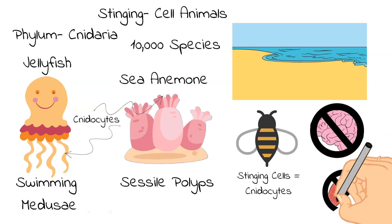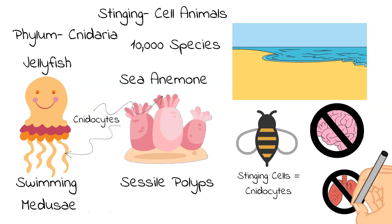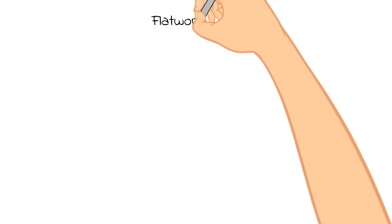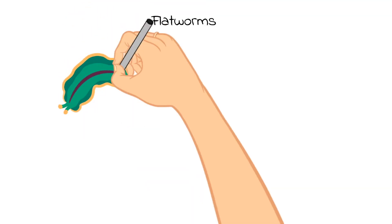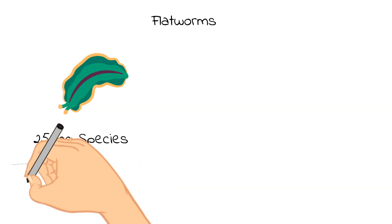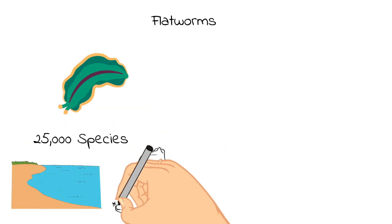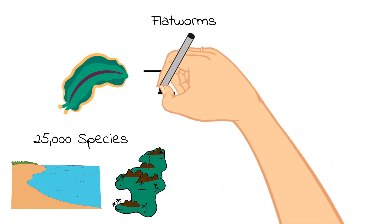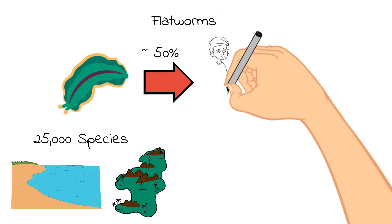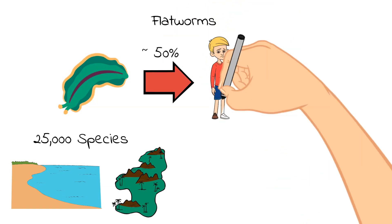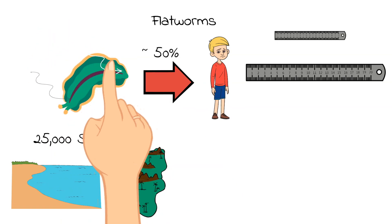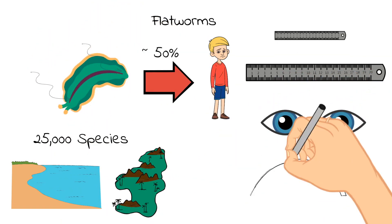Next, let's talk about flatworms. Flatworms are pretty simple animals that have soft bodies, and they have about 25,000 known species. They are one of the largest phylums of animals without a body cavity. They can be found in aquatic environments, both marine and freshwater, and they can even be found in damp terrestrial environments. Over 50% are parasitic, which means that they live off of other organisms. They range in size from extremely tiny to several inches long, and they are pointed at both ends. Flatworms also have eye spots on their head and can range in colors from white to green or brown.